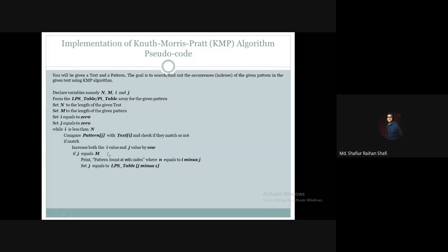We have to increment both i and j. If the j value increases to equal the length of the pattern m, then we print that the pattern was found at index i minus j. So we have a particular formula: the index is i minus j, where i is the current text index and j is the current pattern index. Then we set j to the value of LPS[j-1].